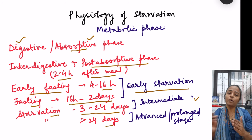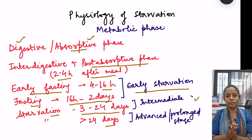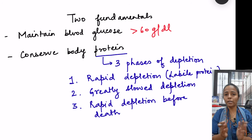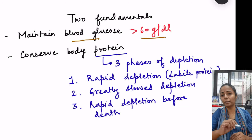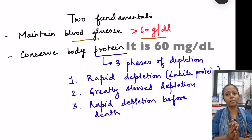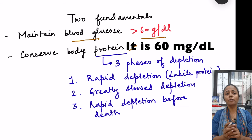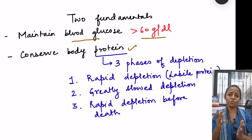We have divided fasting into different stages because in each stage different metabolism takes place — that means the body's needs for fuel are being met by different metabolic cycles. Before going into each phase, we should be clear on two fundamentals: one, the target is to maintain blood glucose levels greater than 60 mg/dL, because certain tissues depend solely on glucose; and two, to conserve body protein, since proteins are responsible for body functions.